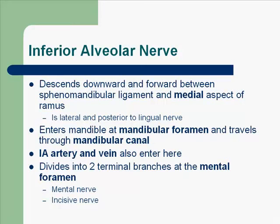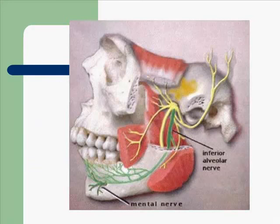The inferior alveolar nerve divides into two terminal branches at the mental foramen: the mental nerve and the incisive nerve. The mental nerve comes out of the mental foramen and supplies the soft tissue of the chin area. If a nerve exits a foramen, it will supply soft tissue in the oral cavity. If a nerve enters a foramen, as the IA nerve does at the mandibular foramen, it is going to supply pulp, bone, and periodontal structures.